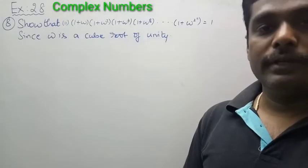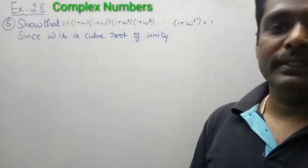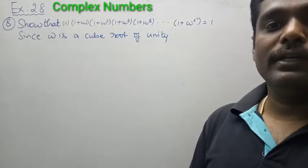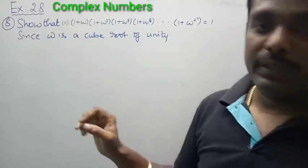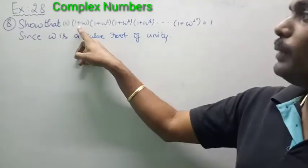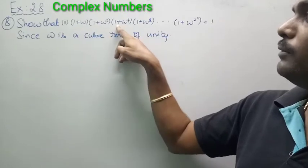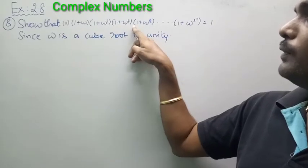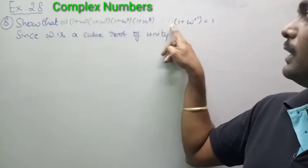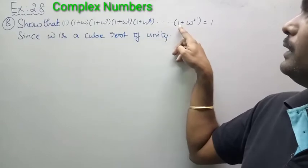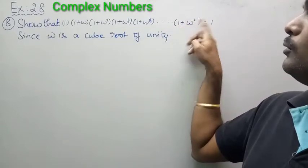Hi my dear students, today we will discuss chapter 2, complex numbers, exercise 2.8, question number 8: show that (1 + ω)(1 + ω²)(1 + ω⁴)(1 + ω⁸) ... (1 + ω^(2^11)) equals 1.